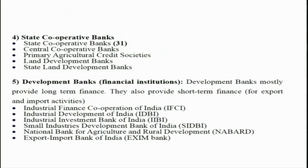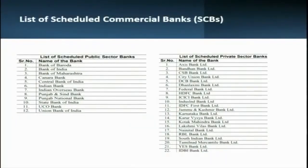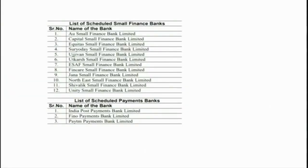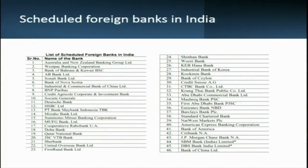There are also state cooperative banks and development banks in India. Let me show you the list of scheduled commercial banks. There are 12 scheduled public sector banks and 22 scheduled private sector banks in India at present. There are also 12 scheduled small finance banks and scheduled payment banks — such as Paytm, POS payment banks, and Fino Payments Bank Limited. Additionally, there are 46 scheduled foreign banks in India at present.